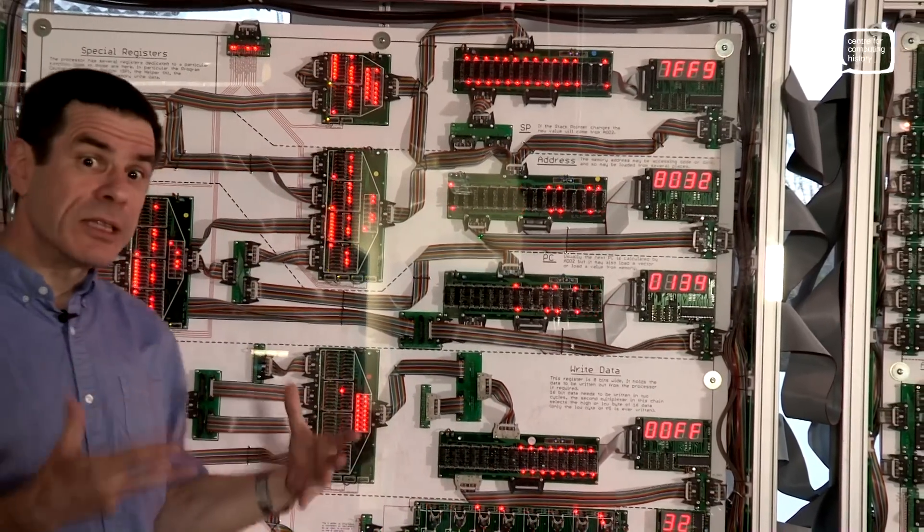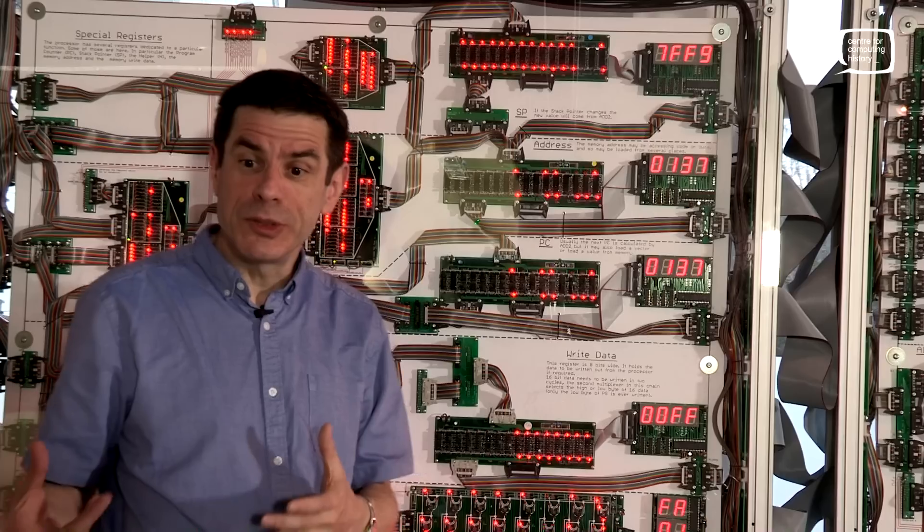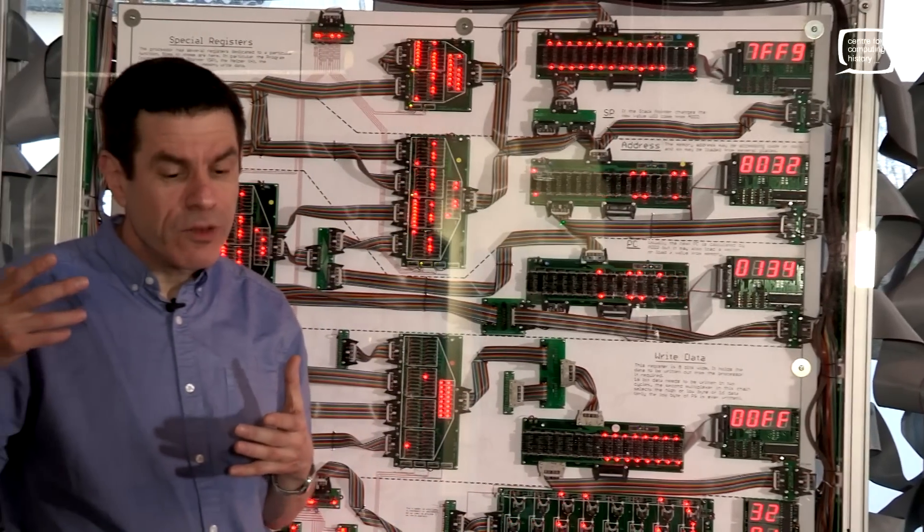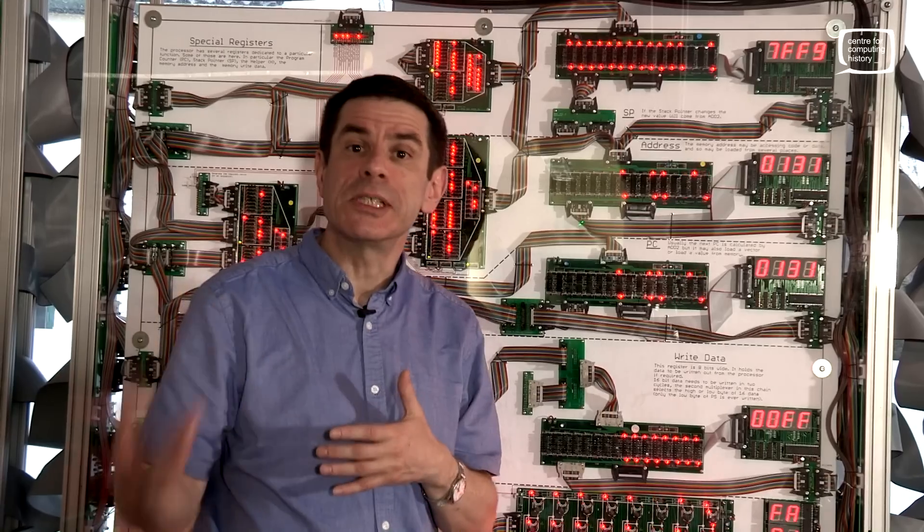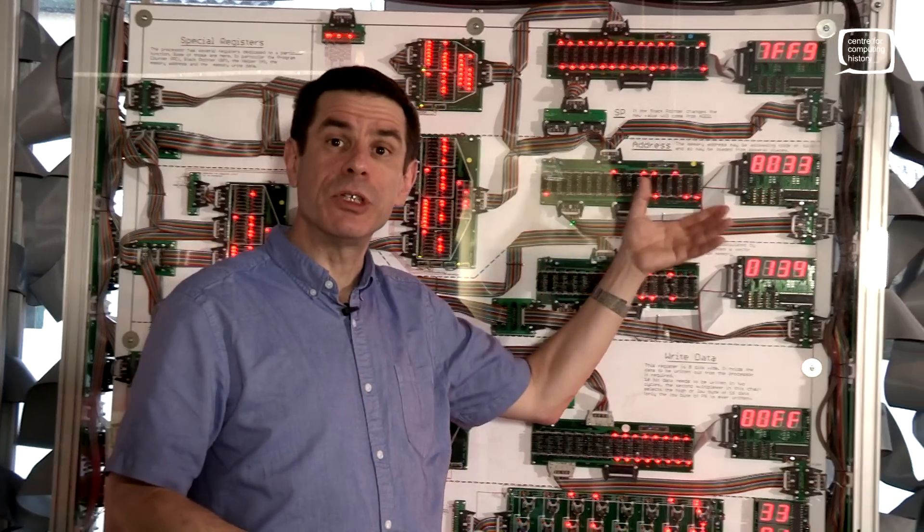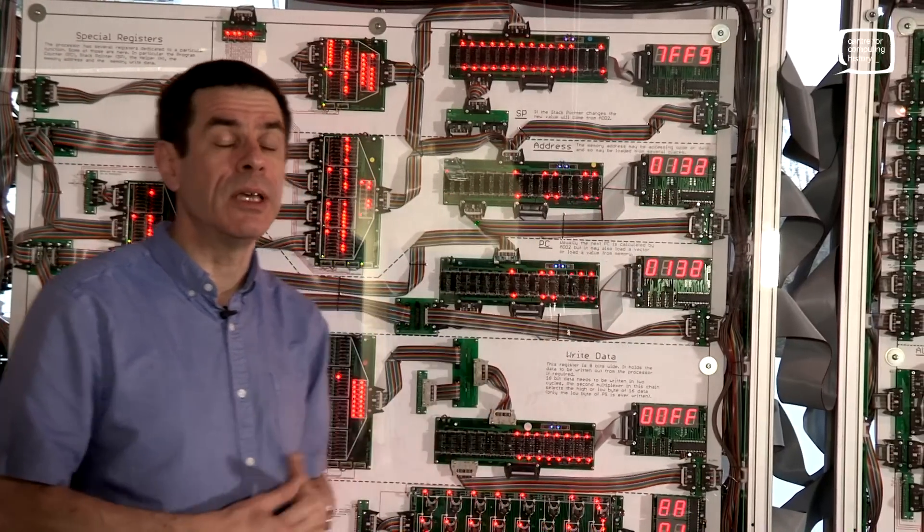To actually get the instructions, we need to go to memory and fetch the instruction. And we find things in memory by addressing it. So we have an address register, which is pointing to where we want to look in the memory.